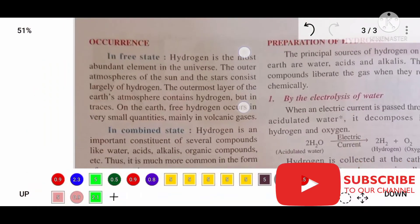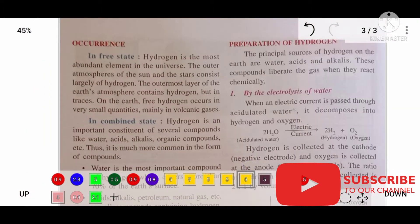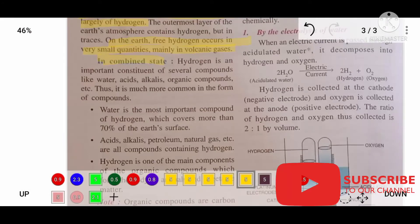Occurrence of hydrogen: In both free and combined states, hydrogen is the most abundant element in the universe. The outer atmosphere, the sun, and stars are made up of hydrogen. On Earth, free hydrogen occurs in very small quantities, mainly in volcanic gases. Hydrogen is an important constituent of several compounds like water, acids, alkalis, and organic compounds.